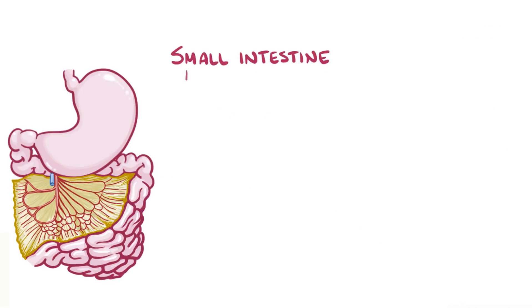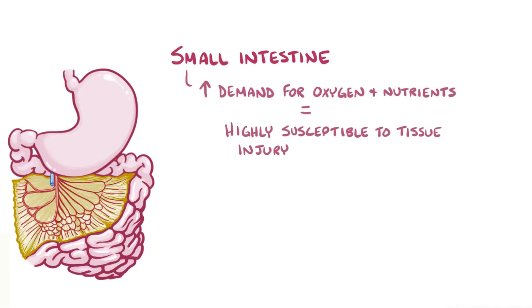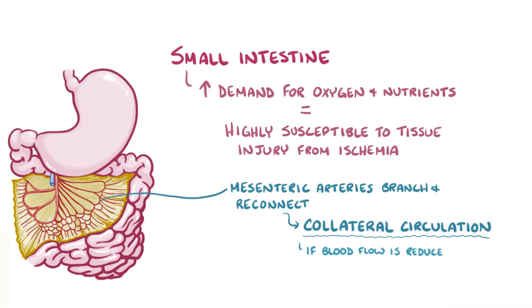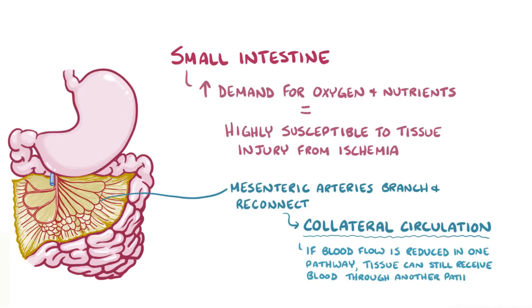Because the small intestine has a high demand for oxygen and nutrients to sustain digestion, it's highly susceptible to tissue injury from ischemia. To reduce the risk of that happening, the mesenteric arteries branch and reconnect at points, forming collateral circulation. That's protective because if blood flow is reduced in one pathway, then the tissue can still receive blood through another pathway. Once the small intestines have gotten oxygenated blood, that blood leaves through the superior mesenteric vein.